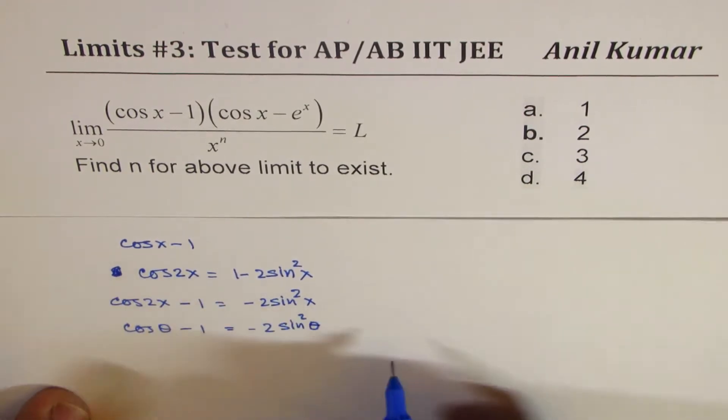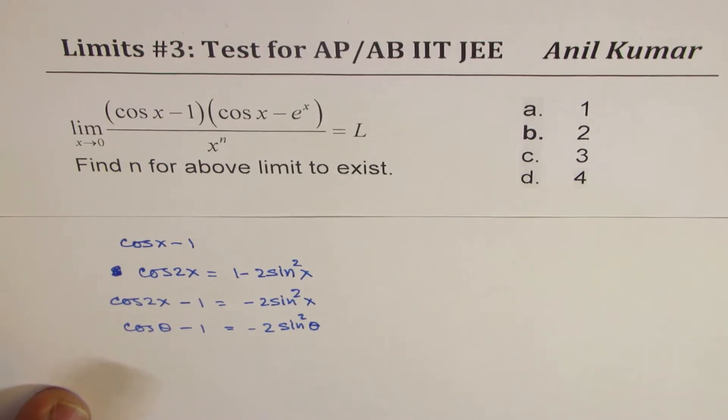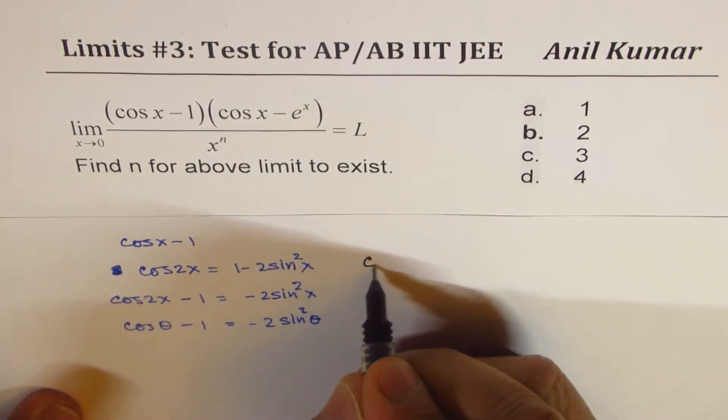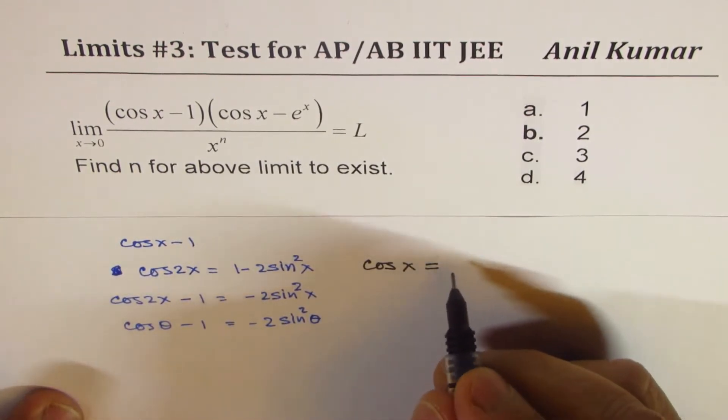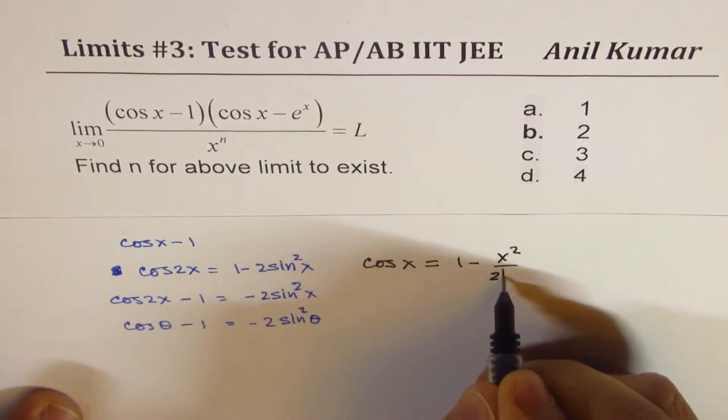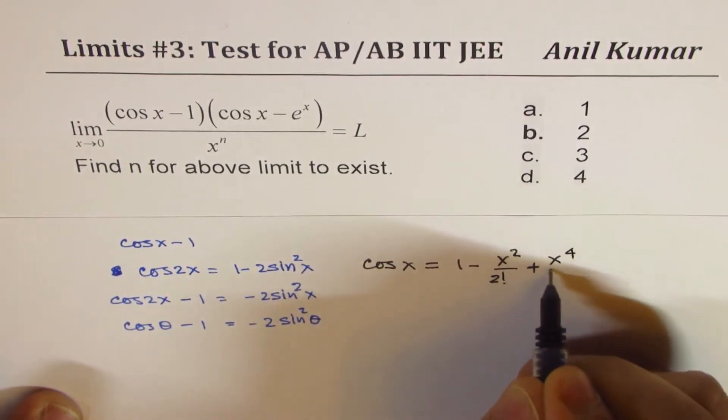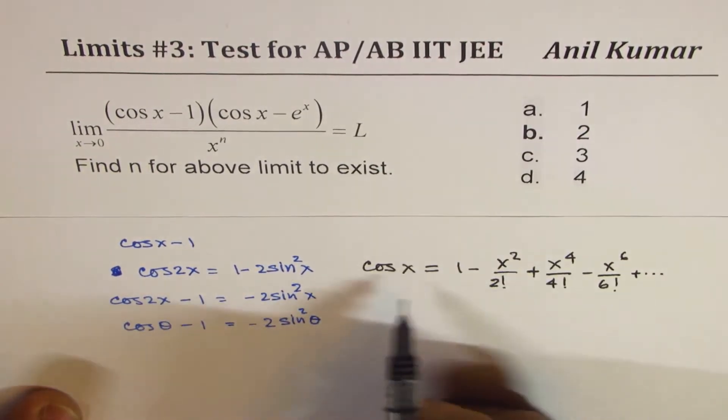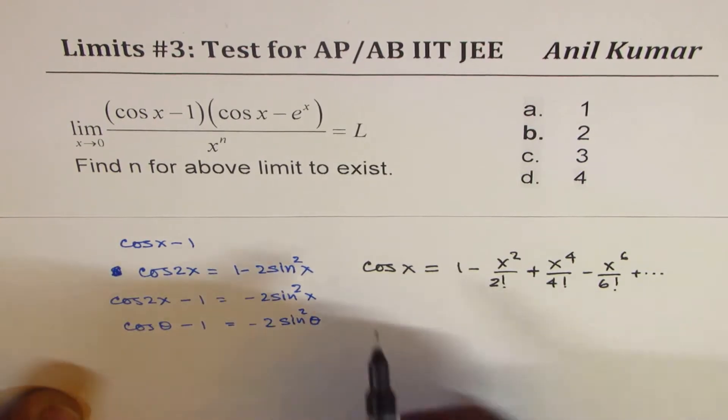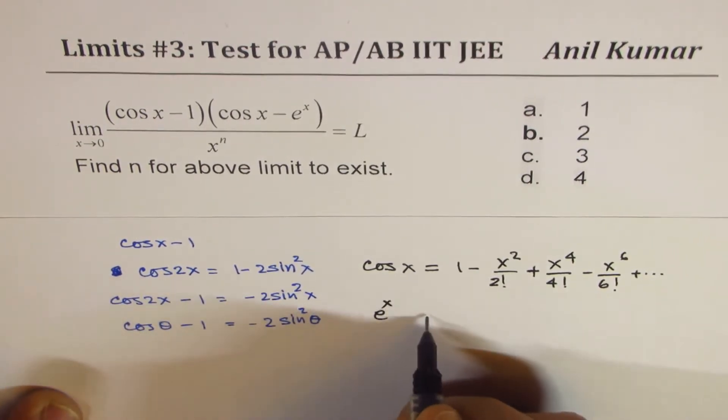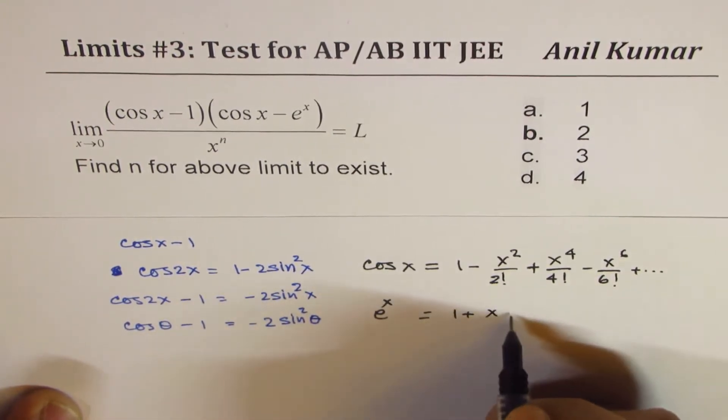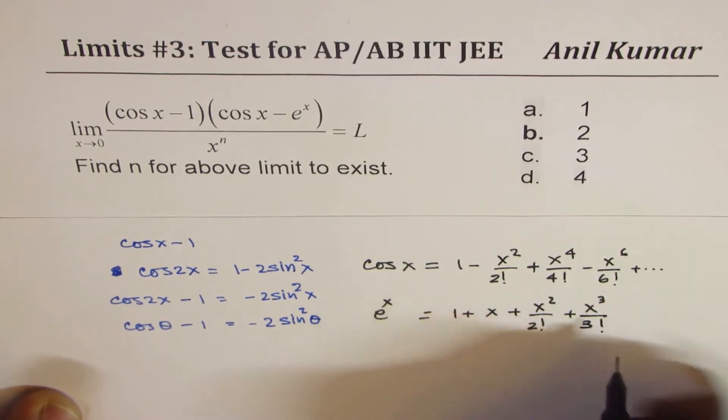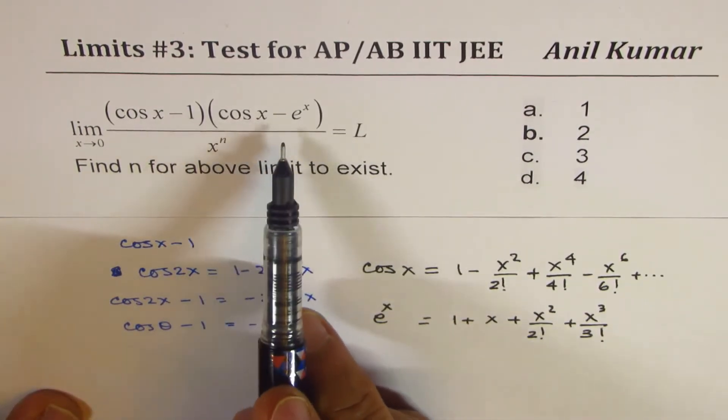Second thing I want to share is how to expand cos x and e^x in terms of x. The expansion formula for cos x is 1 - x²/2! + x⁴/4! - x⁶/6! and so on. And e^x can be written as 1 + x + x²/2! + x³/3! and so on. You have to remember some of these series to answer questions like that.